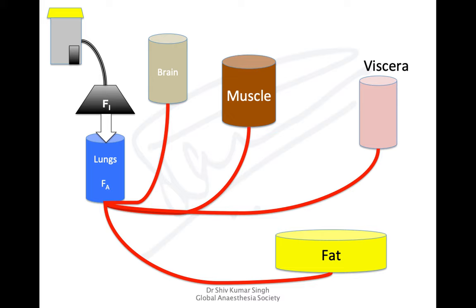For sevoflurane, it will equilibrate with the brain pretty quickly, much quicker than halothane or isoflurane. But it will also be taken up by muscle, viscera, and fat depending on the duration of anesthesia. That's why when you measure the concentration of volatile anesthetic in the breath, it can still remain for 24 to 48 hours — very small concentrations can still be detected because it has gone to the fat and will be leached out slowly.